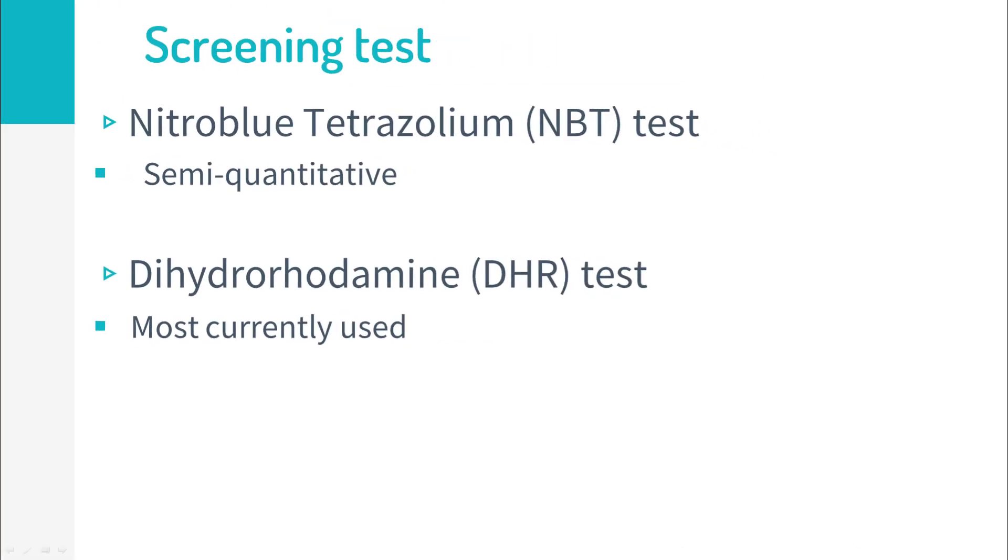The screening tests for chronic granulomatous disease are based on assessing the very intracellular process we've just described. Historically, the nitroblue tetrazolium, or NBT test, has been employed, but it requires significant operator experience and is only semi-quantitative. Currently, the most frequently used screening test for CGD is based on a flow cytometry assessment.